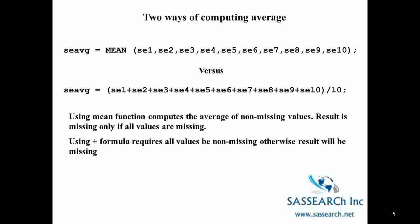In this slide I'm showing two different ways of computing an average. In the first example I'm showing how to use the MEAN function, listing all of the variables SE1 all the way to SE10, and creating a new variable called SEAVG for SE average. SE in this example stands for severity of an event. The other way to compute an average is with a formula, adding up all 10 individual variables and dividing by 10. When you use the MEAN function it computes the average of non-missing values, and the result is missing only if all the values are missing.